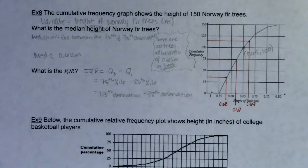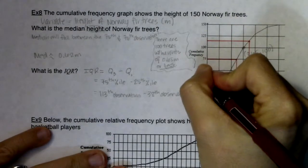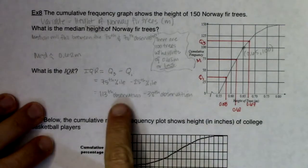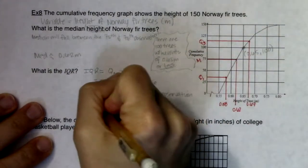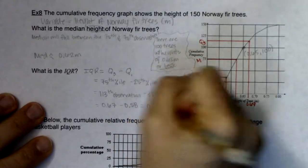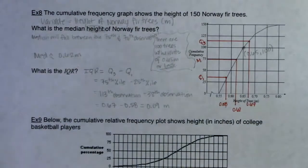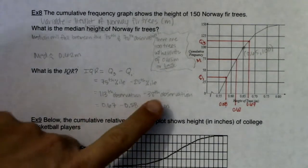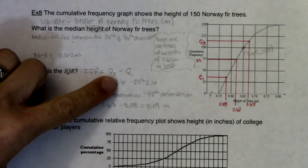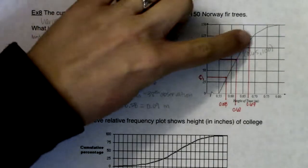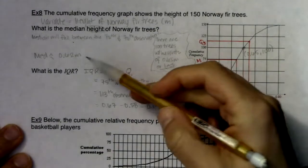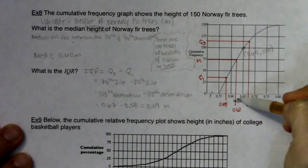So Q1 is about 0.58, median is about 0.62, and Q3 is about 0.67. The 113th observation had a height of about 0.67, and Q1 at 0.58. Subtracting gives IQR of 0.09 meters. The shortcut: for Q3, go three-fourths of the way up your y-axis; for Q1, go one-quarter of the way up; for the median, go halfway up. Then see what x-coordinate corresponds.